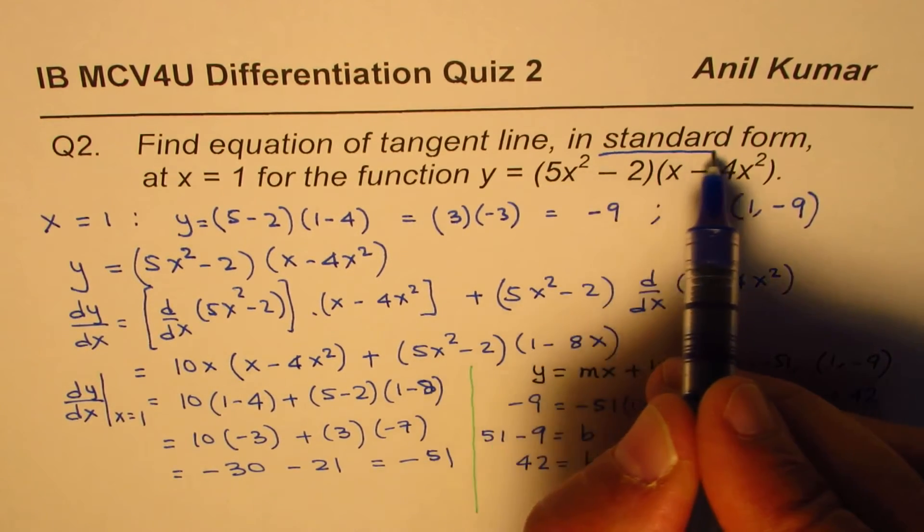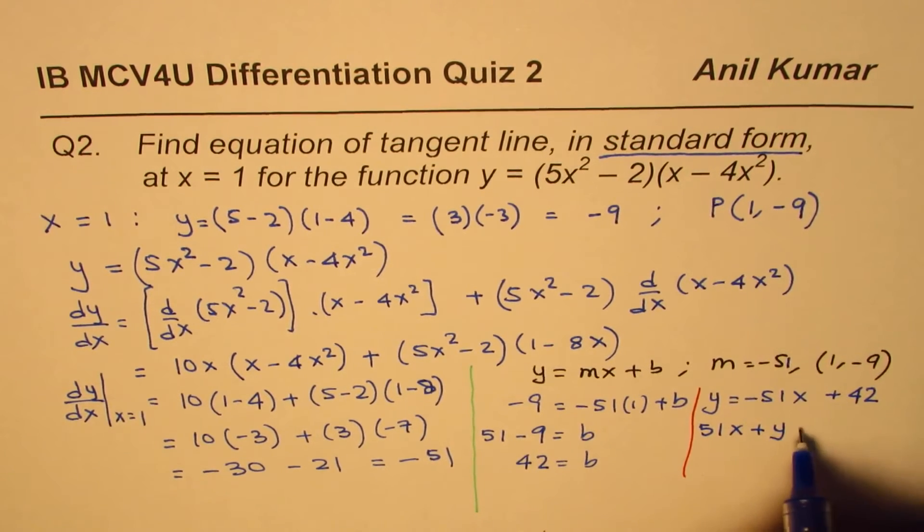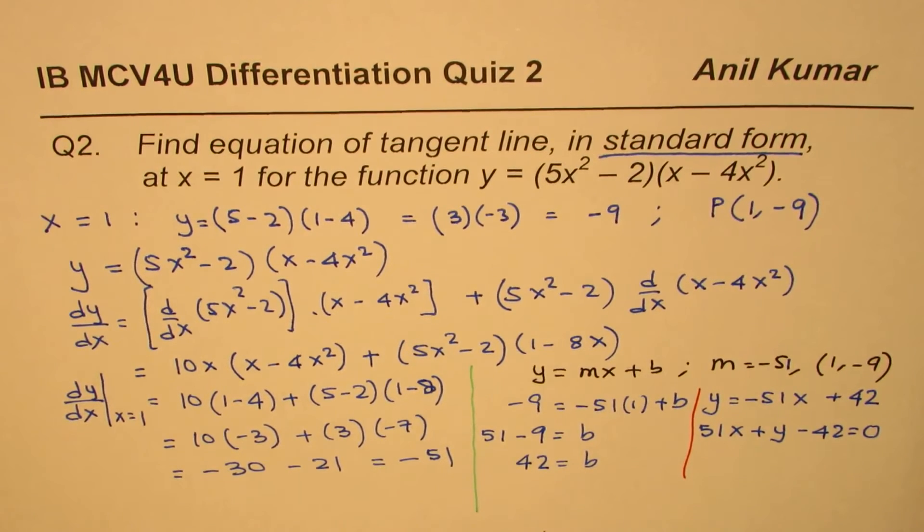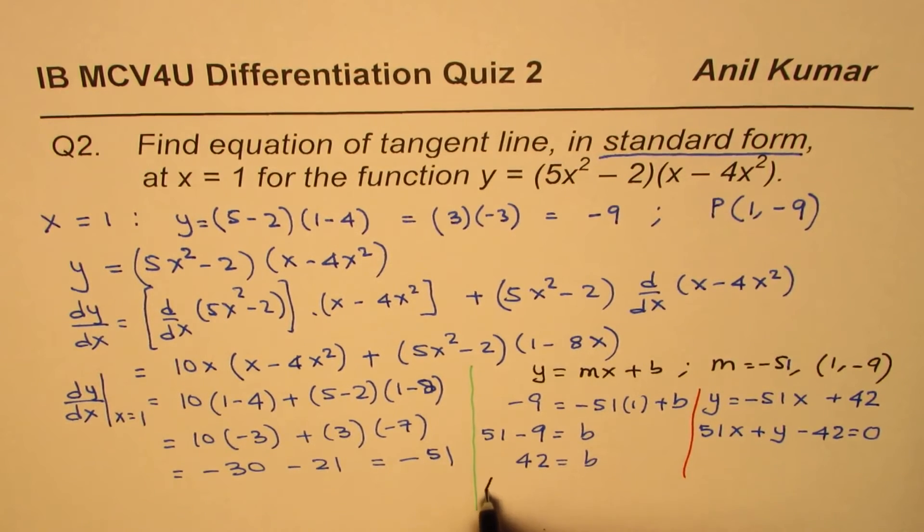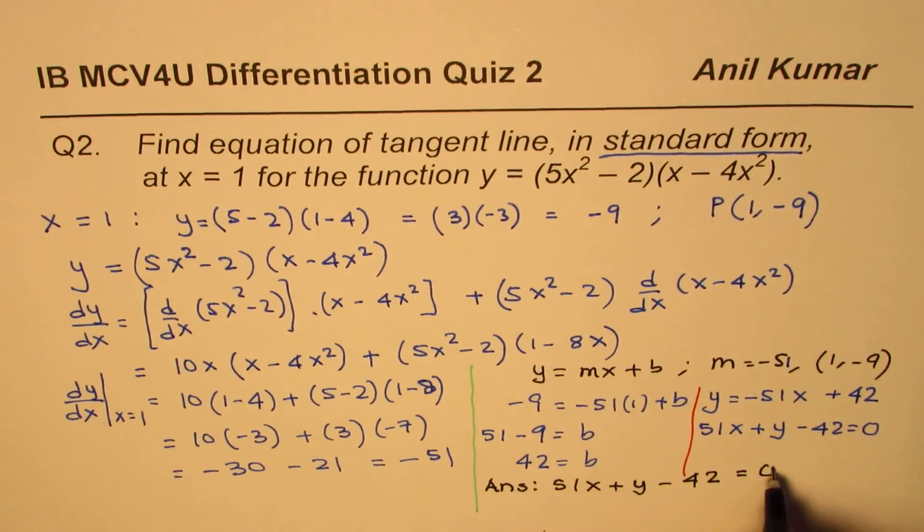Remember, we have to write equation in standard form. So let's rearrange. We'll write 51x plus y minus 42 equals 0. So that is the answer for us. Let me write down the answer. Equation of the tangent line will be 51x plus y minus 42 equals 0.